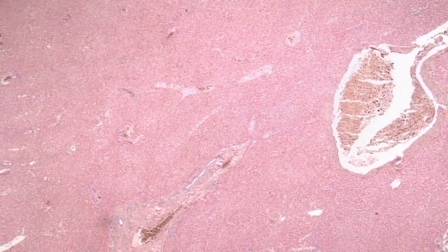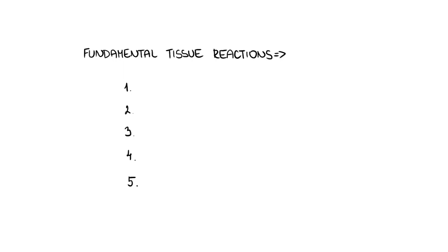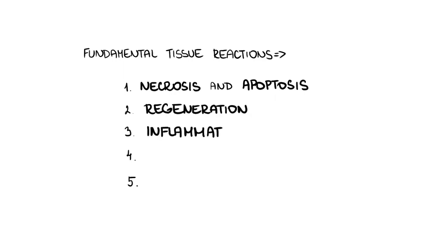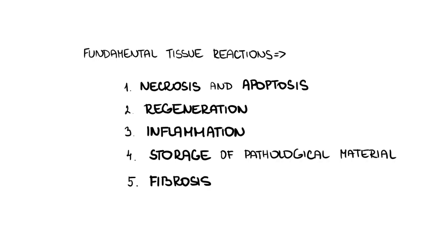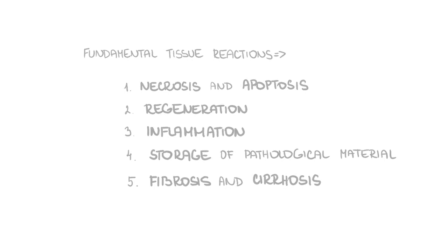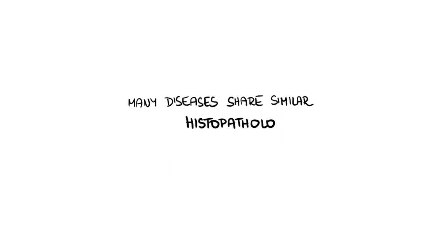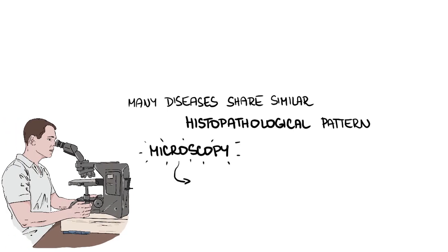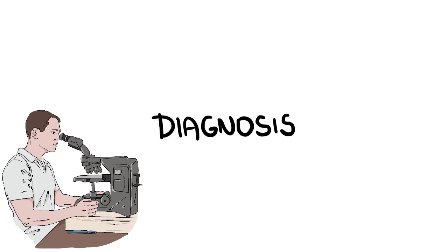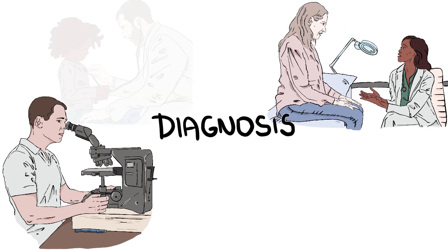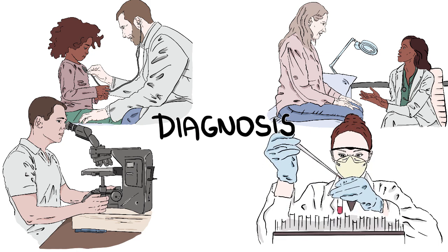Despite its complexity, the liver has only a limited spectrum of morphological changes by which it responds to a broad variety of insults. In microscopy, we can appreciate five fundamental tissue reactions, which often come in combinations: necrosis and apoptosis, regeneration, inflammation, storage of pathological material, and fibrosis and cirrhosis. It is important to stress that many diseases share similar histopathological patterns, and therefore microscopy on its own is not sufficient for identifying a specific disease. To establish a diagnosis, a combination of microscopy, patient history, physical examination, laboratory results, and sometimes genetic testing is necessary.